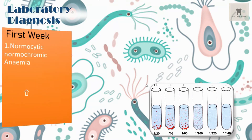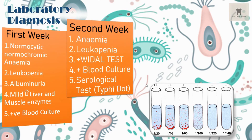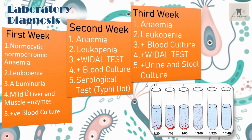In the first week, findings include normocytic and normochromic anemia, leukopenia, albuminuria, mild increase in liver and muscle enzymes, and a positive blood culture. In the second week, there is anemia, leukopenia, and a positive Widal test showing a fourfold rise in agglutinins against the somatic O antigen. In the third week, findings include anemia, leukopenia, positive blood culture, positive Widal test, and positive urine and stool cultures.